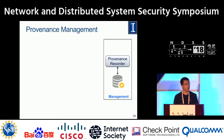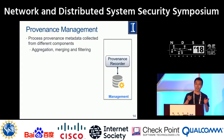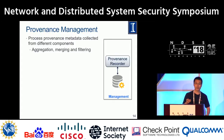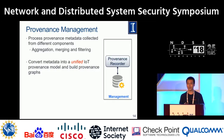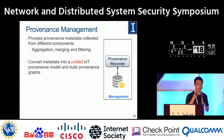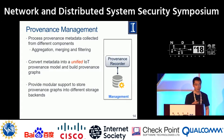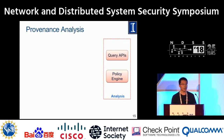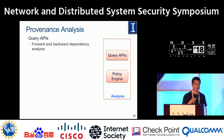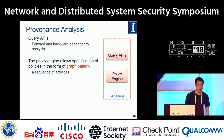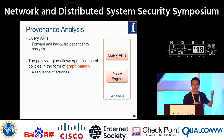For the management module, data provenance records collected from different components are aggregated, merged, and filtered, then converted into a unified IoT provenance model and built into provenance graphs, which are stored in different storage backends. For the analysis module, we provide a query API for forward and backward analysis, and a policy engine where you can specify policies as graph patterns.